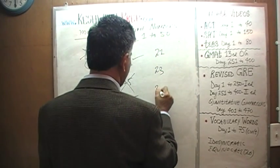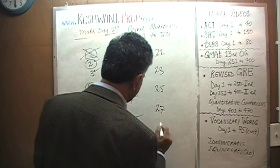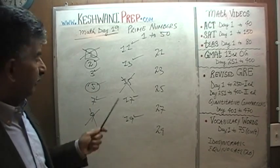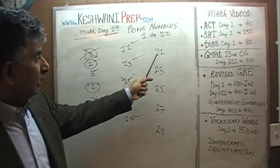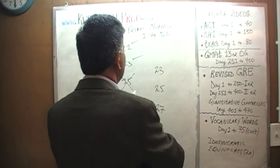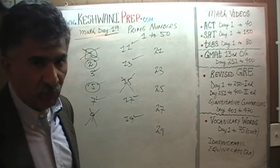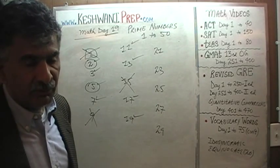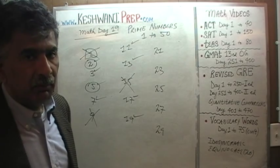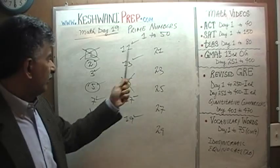Now the odd numbers 21 through 29: 21, 23, 25, 27, and 29. Can 21 be divided by 3? How do we know whether or not we can divide 21 by 3? It's a silly question because it's a very small number, but we want to get in the habit of doing this — this habit will come in quite handy when we're dealing with larger numbers.